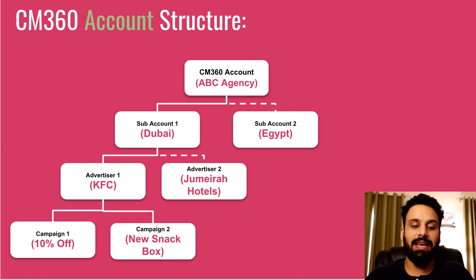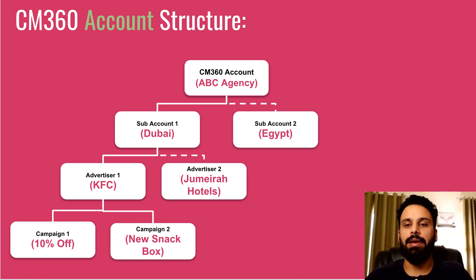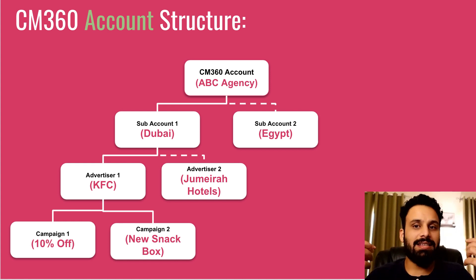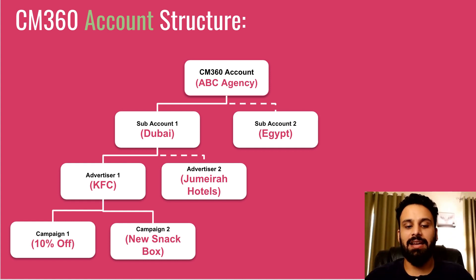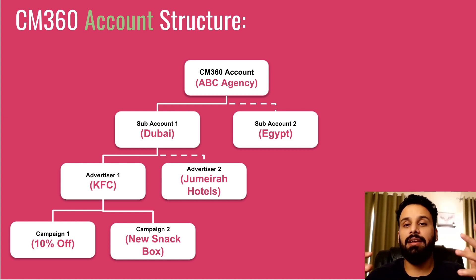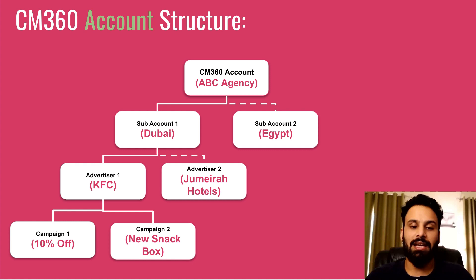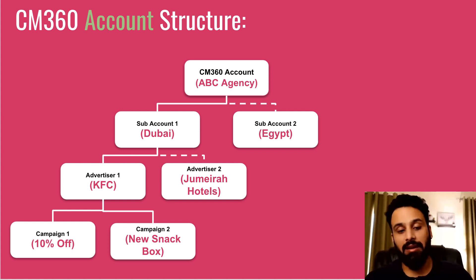Within each advertiser, for example KFC, they can have multiple campaigns. Let's say they have two campaigns running in parallel: one is a '10% off' campaign running for one month with its own creatives and landing page, and another is a 'New Snack Box' campaign with its own budget, creatives, and start/end dates. All you have to remember is: account → sub-accounts → each sub-account has multiple advertisers → each advertiser has multiple campaigns.